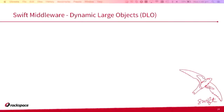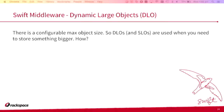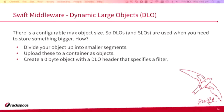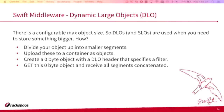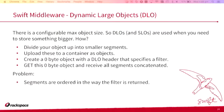We also ship middleware that depends on this ordering — it's called the DLO, the Dynamic Large Object. In Swift there's a configurable max object size (5 GB by default). DLOs let you divide an object into smaller segments, upload them to a container, then create a zero-byte object with a special DLO header specifying a filter. When you GET that object, it uses that filter to gather all the segments, concatenates them, and sends them back. The filter is just a container GET — so if your order isn't byte order anymore, you get large corrupt files back.